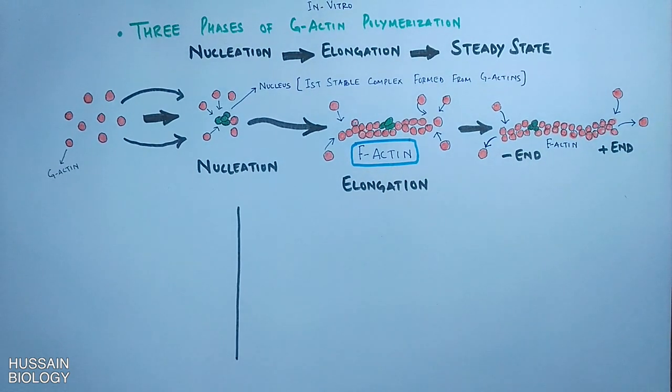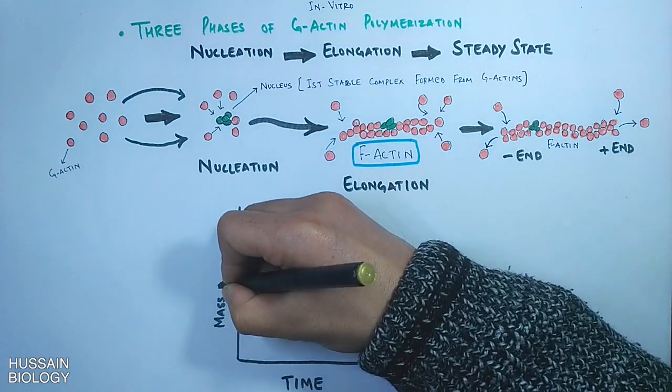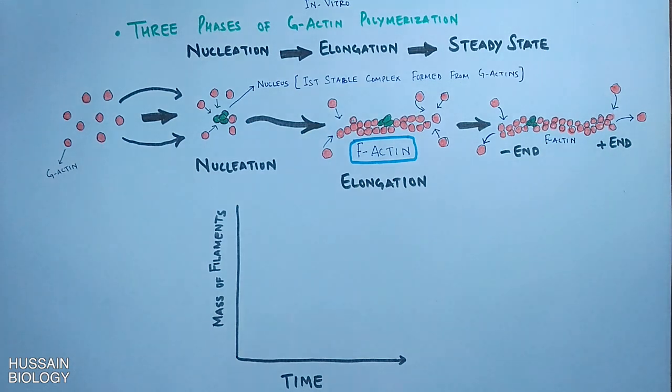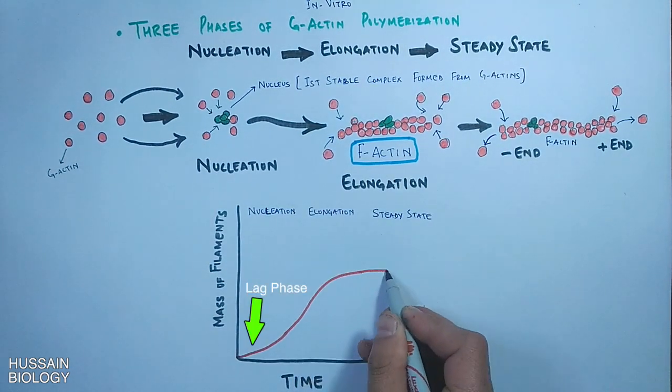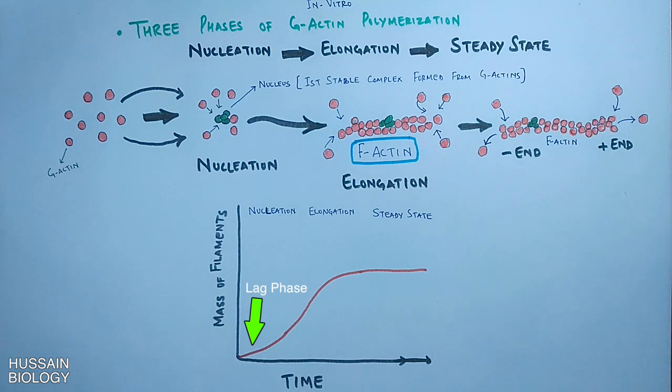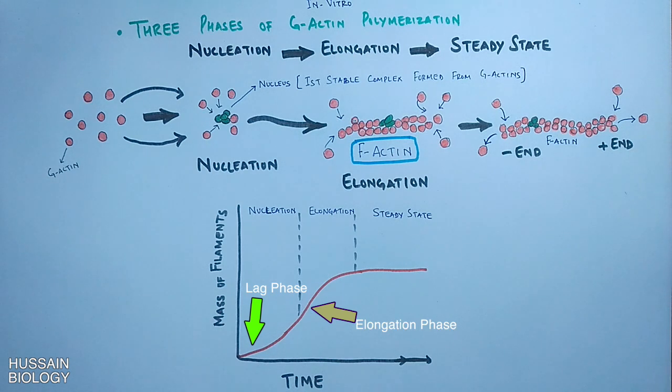Now let's see the kinetic curves of the phases of G-actin polymerization. On x-axis we have time and on y-axis we have mass of filaments. In in vitro conditions we see the initial lag phase which is due to the nucleation. Then we have elongation phase where this curve kicks up, and then finally the equilibrium is reached where there is no net gain or loss in the filament.